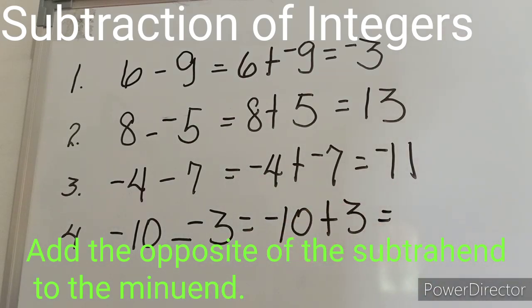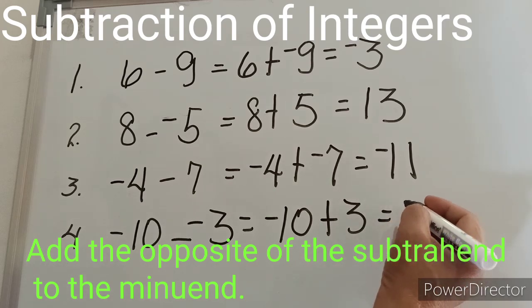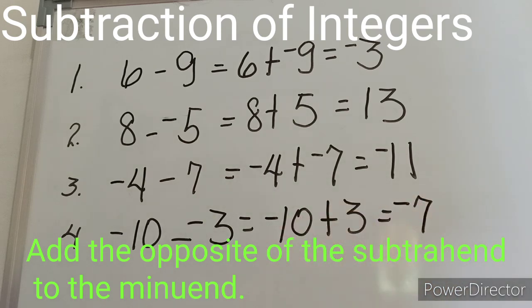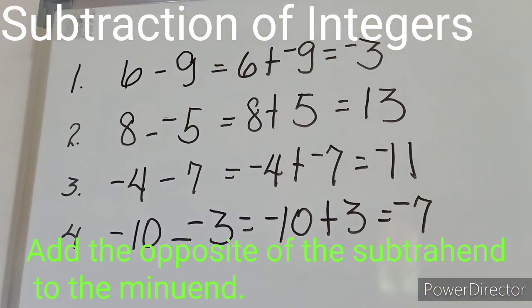Finally: negative ten, plus the opposite of the subtrahend which is three. Since this is addition of unlike signs, we subtract the smaller number from the bigger regardless of their signs: ten minus three is equal to seven. But the sign of the number considered larger is negative, therefore our answer is negative seven. So remember when subtracting integers: add the opposite of the subtrahend to the minuend.